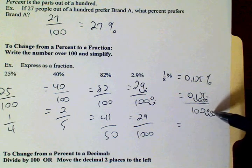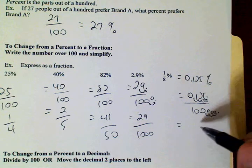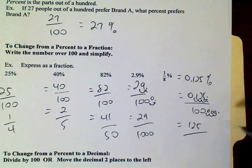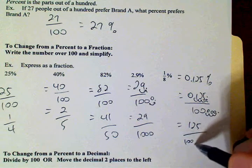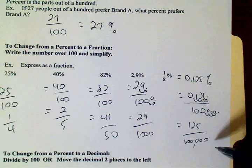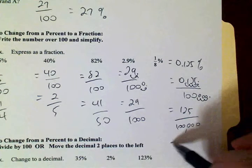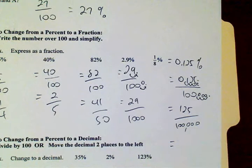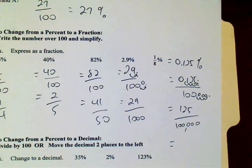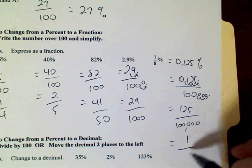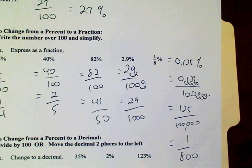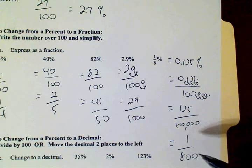One, two, three. So we get one hundred and twenty-five over one hundred thousand. Let's divide that out — let's see if one hundred and twenty-five divides into a hundred thousand. And it does — it's going to divide eight hundred times. So one-eighth percent is the same as one over eight hundred.